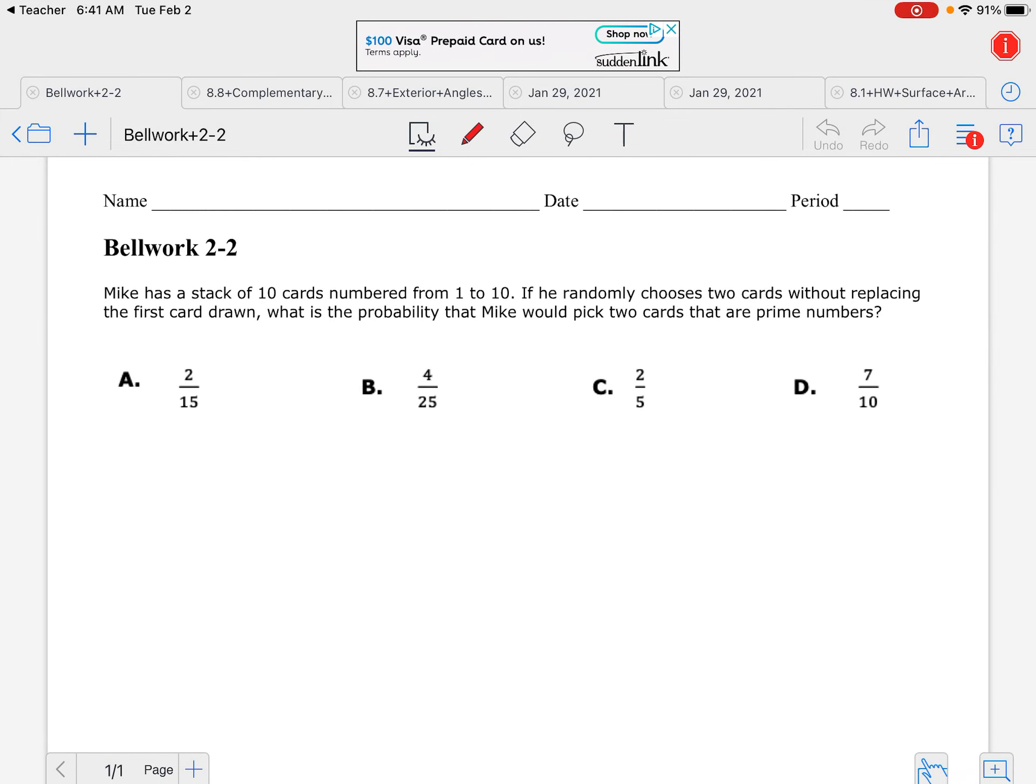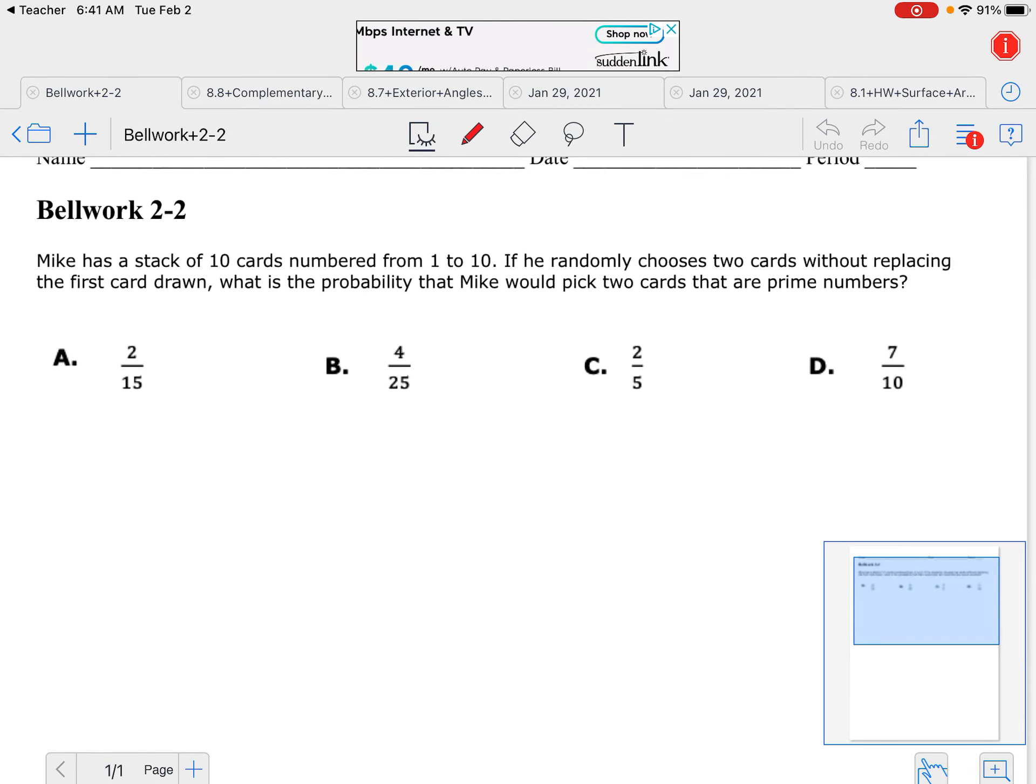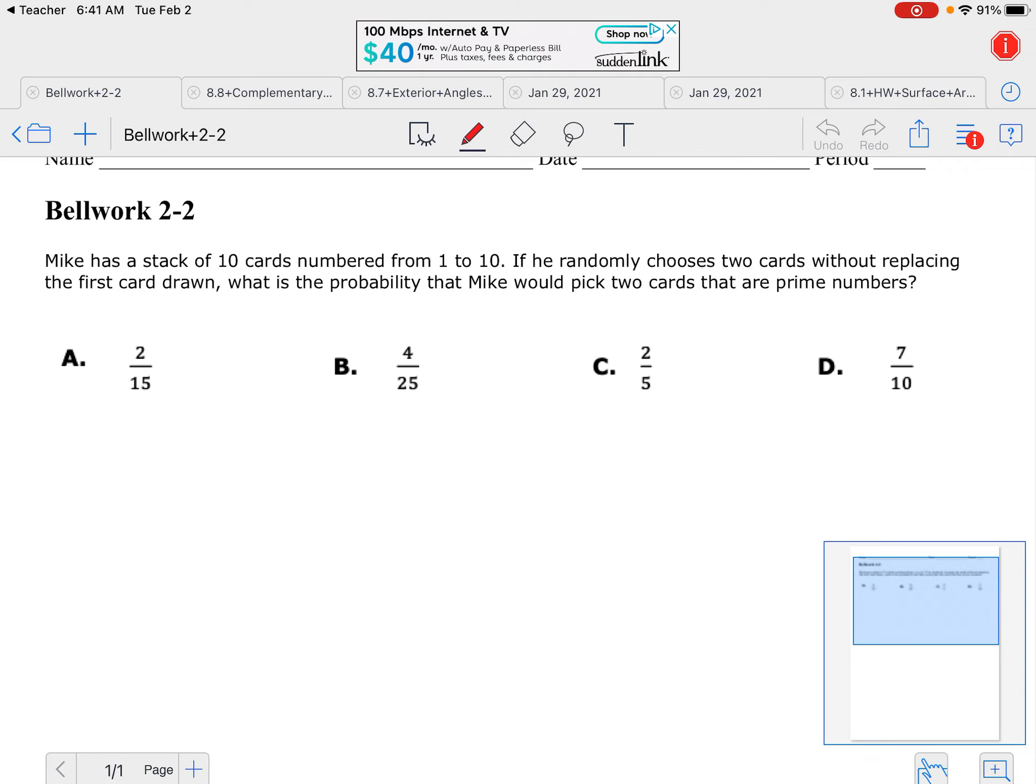This Bellwork question is over probability. It says Mike has a stack of 10 cards, and they're numbered 1 to 10. He randomly chooses 2 cards without replacing the first card. What is the probability Mike would pick 2 cards that are prime numbers?